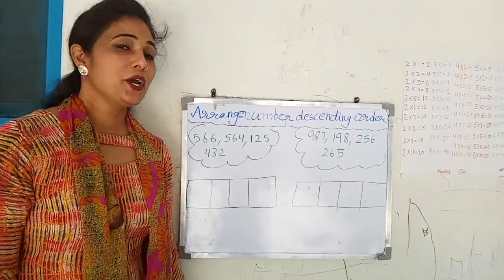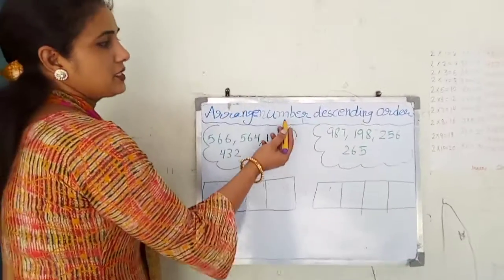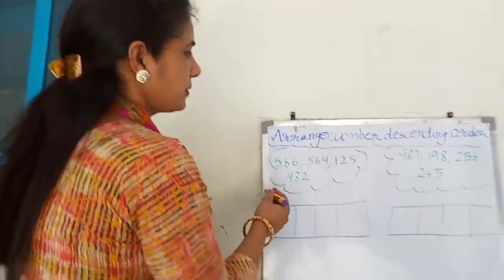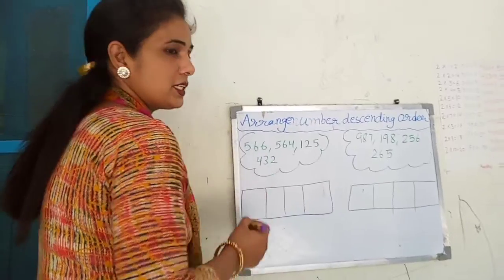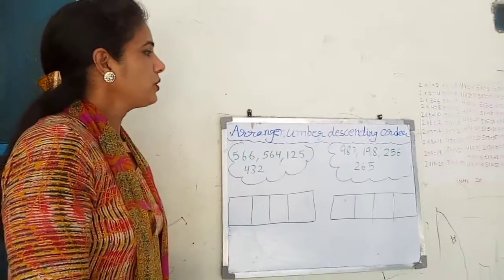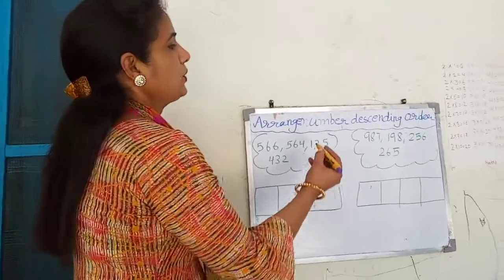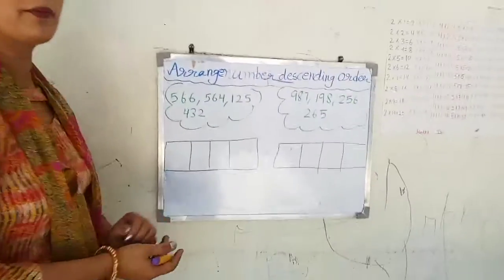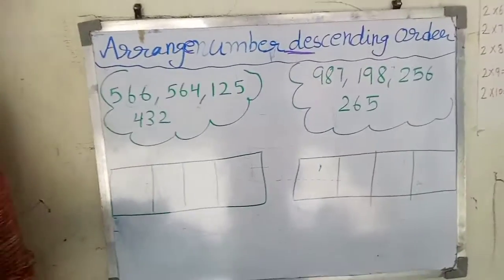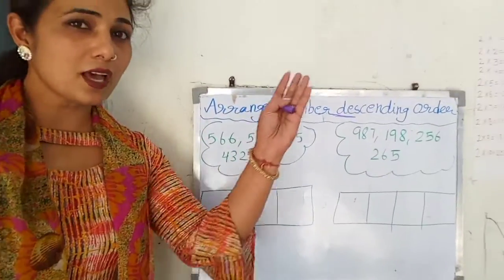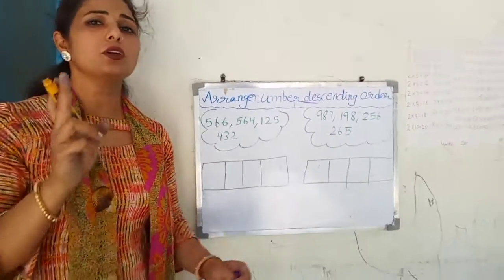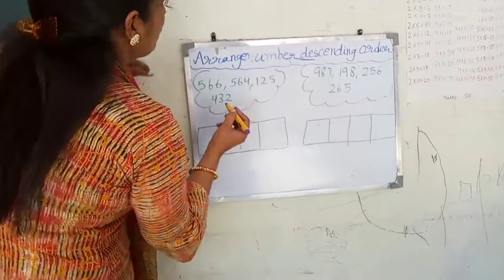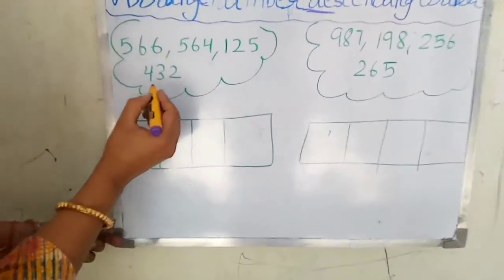Hello children, today our topic is to arrange the numbers in descending order. You can see the numbers here arranged in descending order. First of all, we need to know what descending order means. The first alphabet is D — D for dog. Dog size is big, so in descending order the first number is also big.